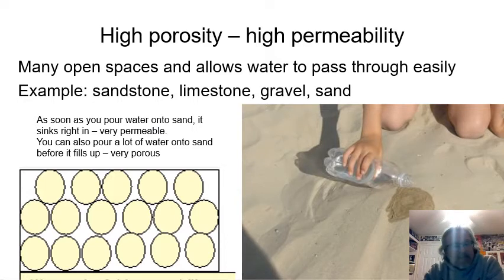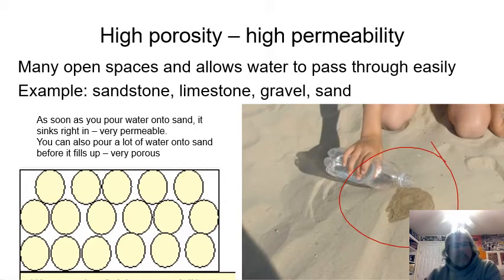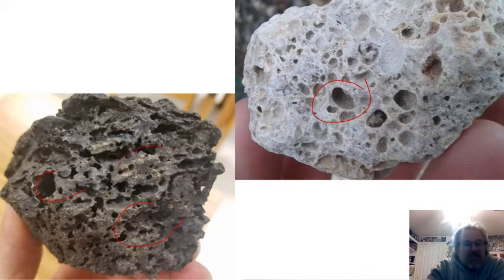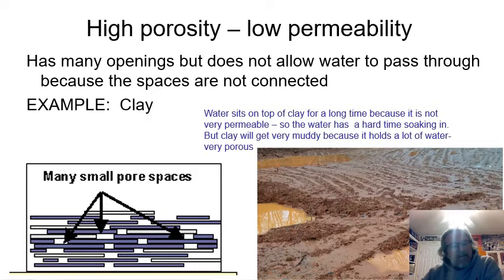Sand, on the other hand, is the exact opposite. Sand has lots of open spaces and it allows water to pass through easily. If you've ever been to the beach and poured water into sand for a moat around a sandcastle, the water goes in almost as fast as you can pour it — because sand is very porous and highly permeable. Some rocks underneath our feet look similar to sand, are even more porous, and water can move through them fairly quickly as well.